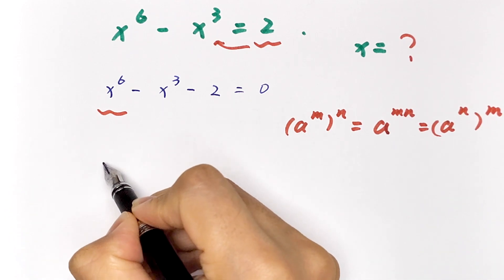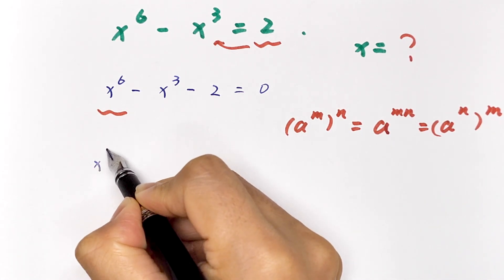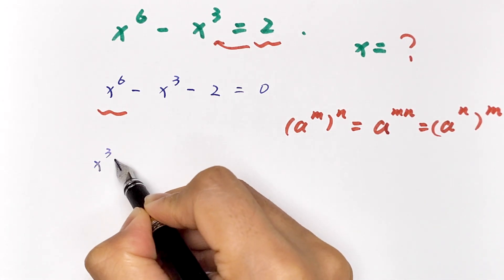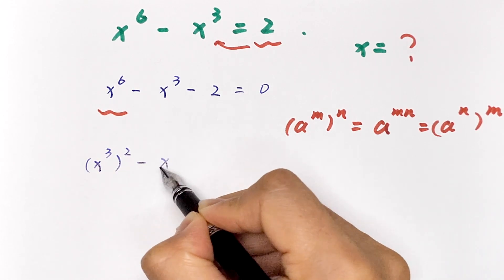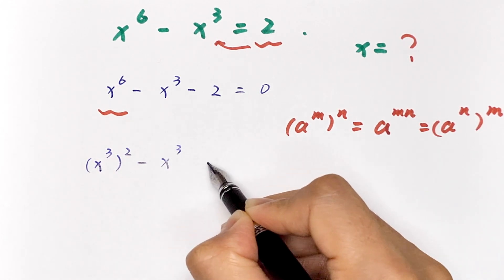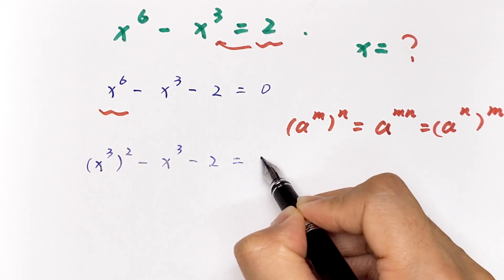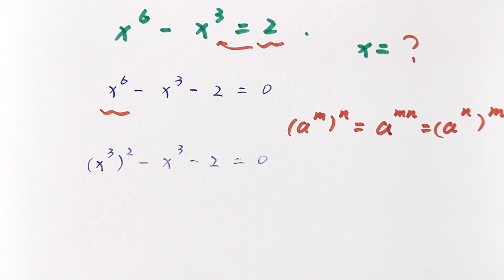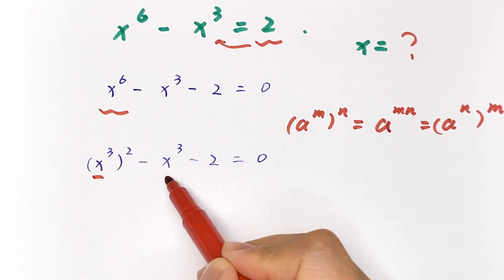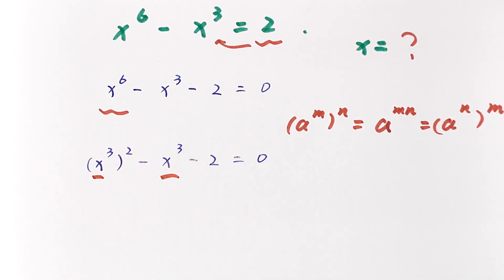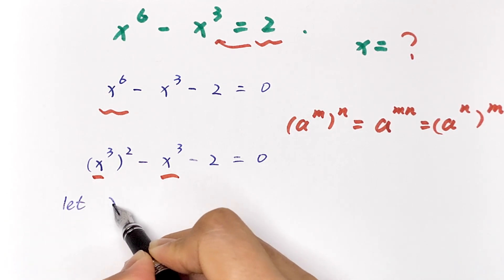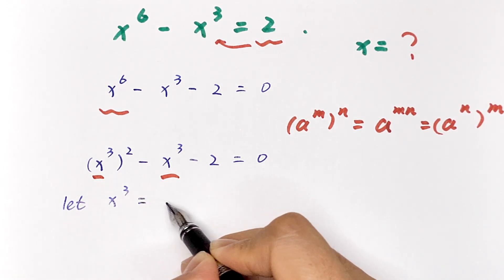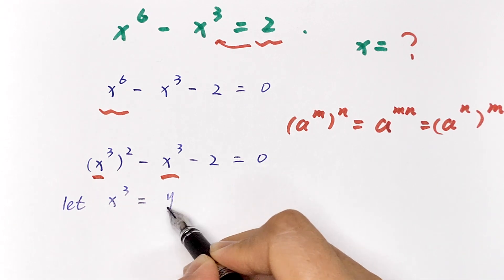So we rewrite x to the power 6 as x cubed, bracket, squared. The equation becomes x cubed squared minus x cubed minus 2 equals 0. Since x cubed is common, we let x cubed equal y.